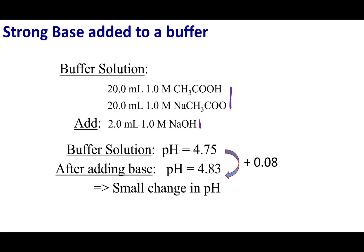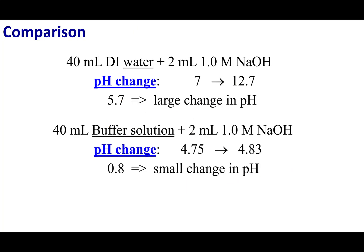For comparison, if you did the same experiment with 40 mL of DI water at pH 7, adding that same strong base would jump the pH to 12.7 — a change of 5.7. In the buffer solution, the pH changed by only 0.08. This shows that a buffer is truly resistant to pH changes.